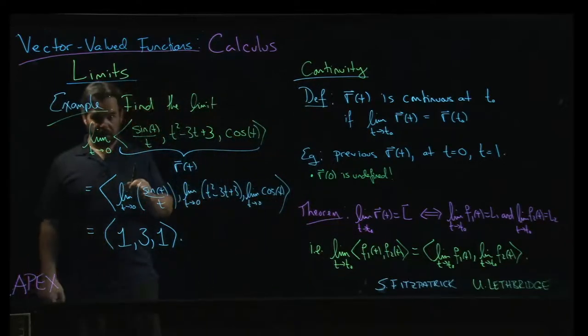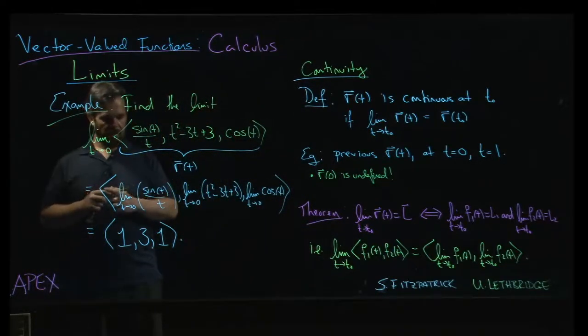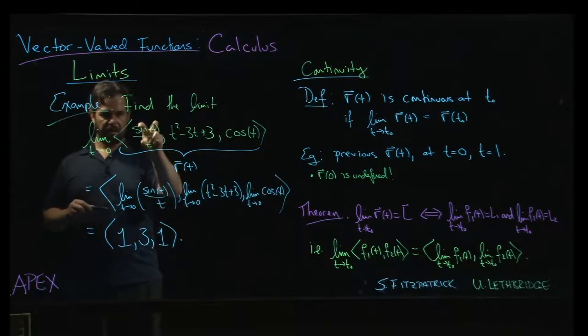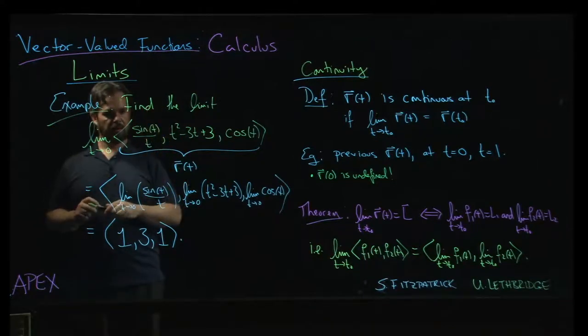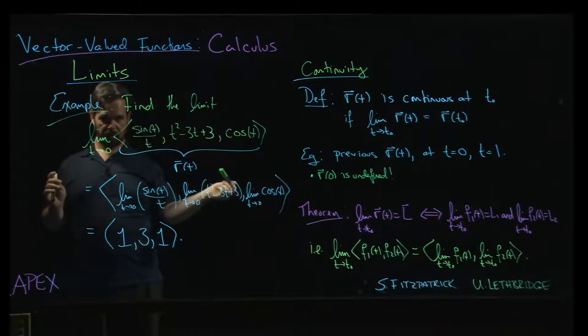I can take the limit of sine t over t as t goes to 0. I know that that limit is 1, but I can't actually plug t equals 0 in. I cannot do it by direct substitution. I get 0 over 0. It's not defined.